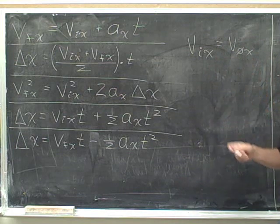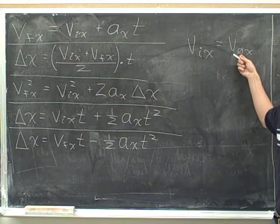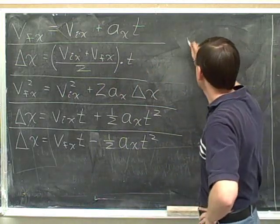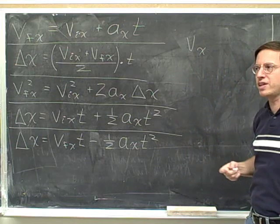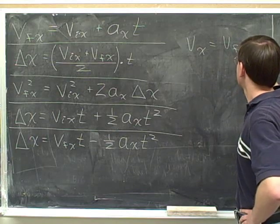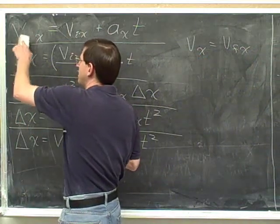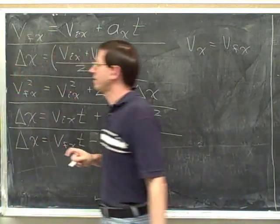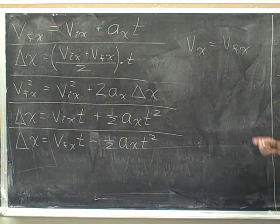It's perfectly fine to use 'o' or zero for initial if that's what you like. We're going to use this symbol, but it means the same thing. Also, if a textbook just mentions the velocity but doesn't tell you whether it's final or initial — just a 'v' with no subscript — the convention is that that's the final velocity. I think it's better for a beginning student to include the 'f' as a reminder that it's the final velocity. These symbols mean the same thing, but we're going to include the 'f' for final.